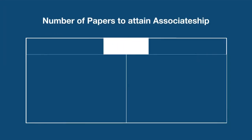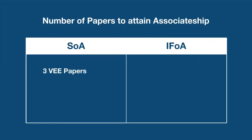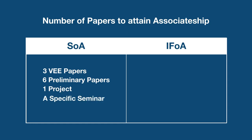To summarize, the SOA consists of three VEE papers, six preliminary papers, one project, and a specific seminar to attend, while the IFOA has ten examination papers.